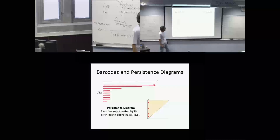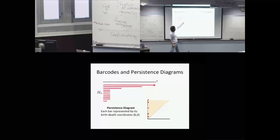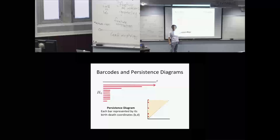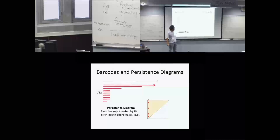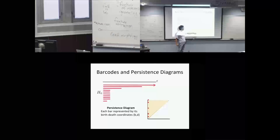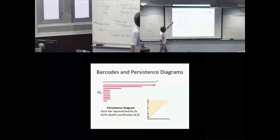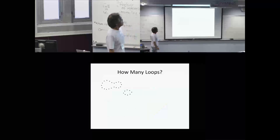Another way of encoding the same information: for each bar, look at what value of epsilon the bar is born and what value it dies. So I just need a pair of numbers to represent in the plane. Nobody can die before they're born, so the death time has to be larger — they live above the diagonal. Because in this case everybody was born at time zero, the horizontal component is zero and there are different death times. One bar goes all the way to infinity, but you can make a convention and chop it off.